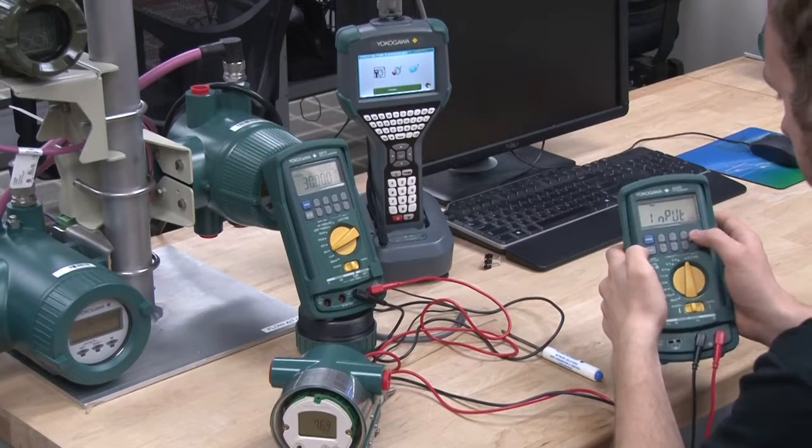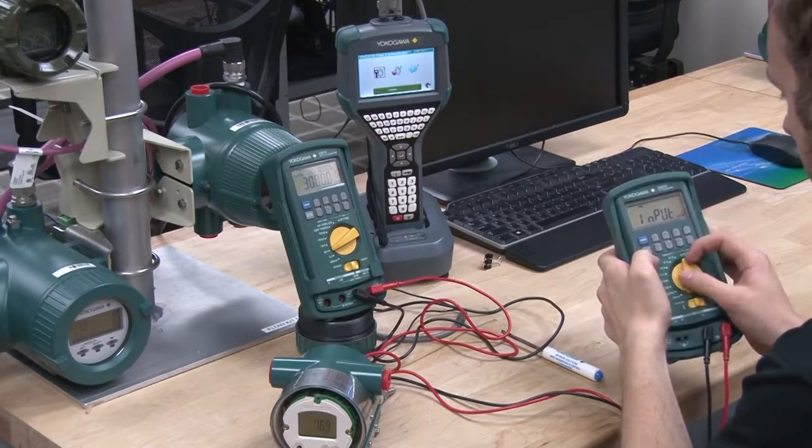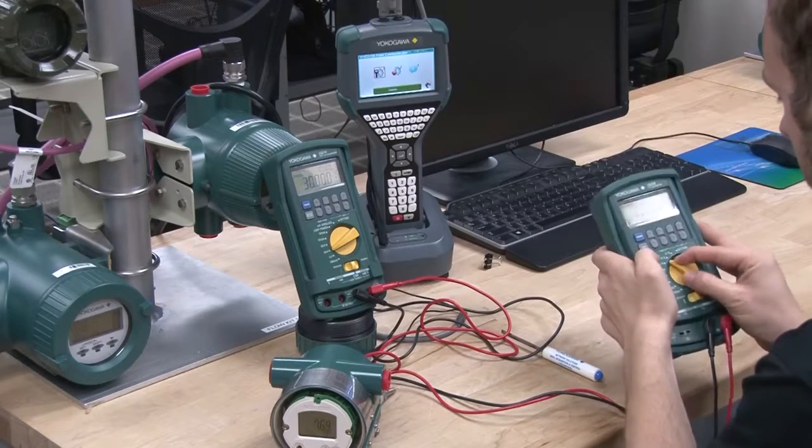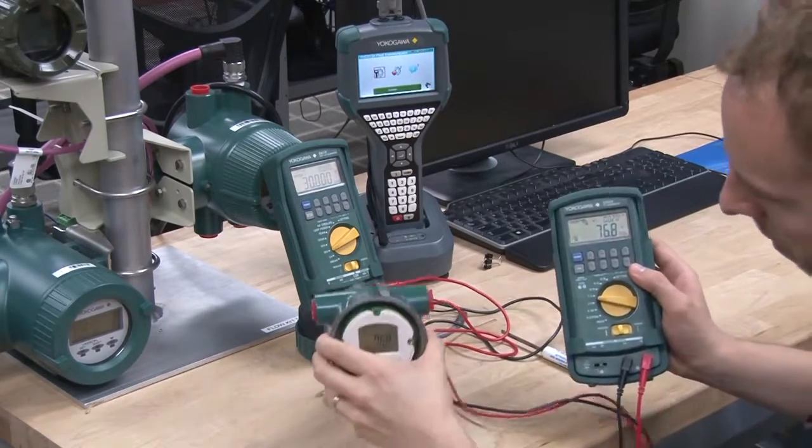RTD calibrators are used to check transmitters, controllers, recorders, probes, and much more by measuring the resistance of a metal with changes of temperature in its area.